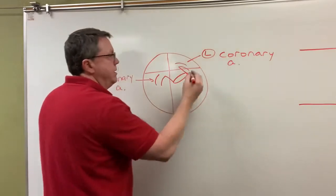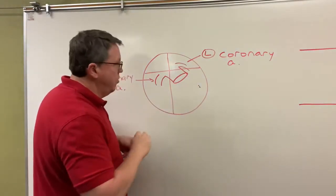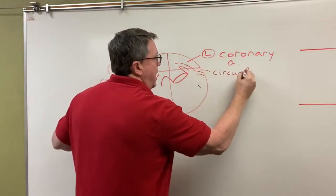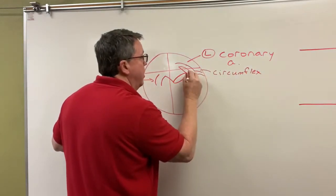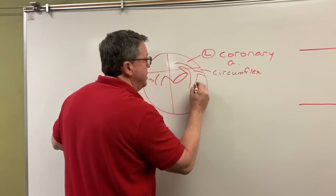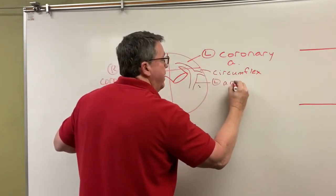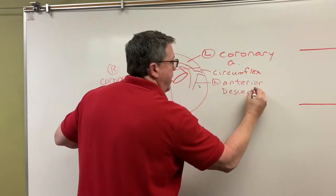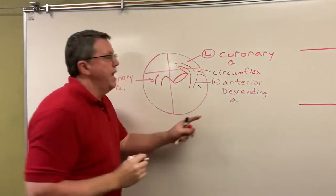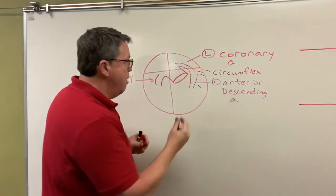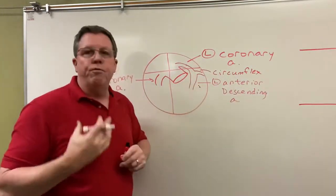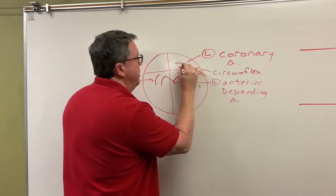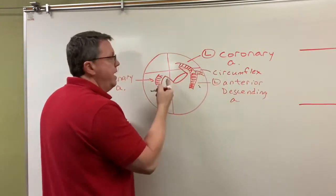So the coronary arteries then will start to come down, and then coming off of here, I'm going to have what's called the circumflex artery. And heart attacks can occur in any artery in the body, but then I'm eventually going to get my left anterior descending artery. This is the one that's most common to have a heart attack, is the left anterior descending artery, and what it does is it basically supplies blood to the front part of the heart.